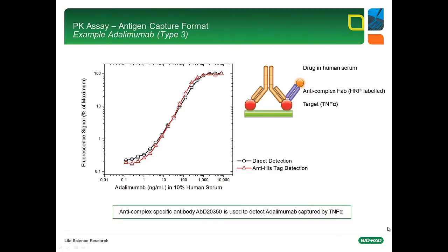As mentioned, the type 3 antibodies can be used to develop sensitive assays without the need of the bridging assay format. Here, a so-called antigen capture assay is shown. Human TNF-alpha was coated on a microtiter plate and adalimumab spiked into human serum was added in the given concentrations. The complex formed was detected either with HRP-labeled type 3 UCAL antibody directly, shown with a black curve, or by adding first the unlabeled type 3 UCAL antibody and then an HRP-labeled anti-His-tag antibody, shown with the red curve. Regardless of the detection method, this assay format provides a robust and sensitive assay curve.